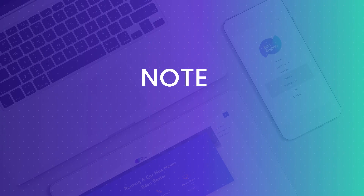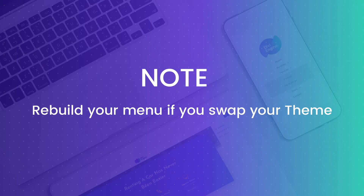Before we start, I just want to clear up two things that I think you should know. Divi Mobile saves the menu you build to your active theme. Therefore, if you make any changes to your active theme or your child theme, like swapping them out for something else or a different child theme, you'll need to rebuild your menu.